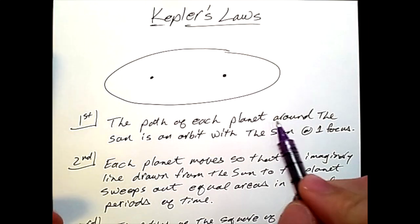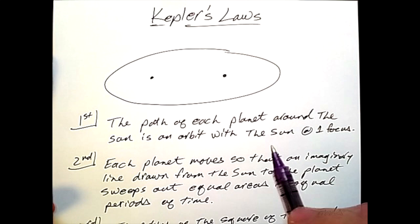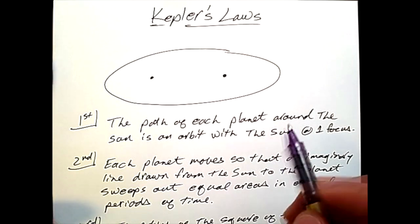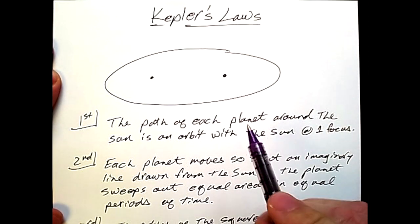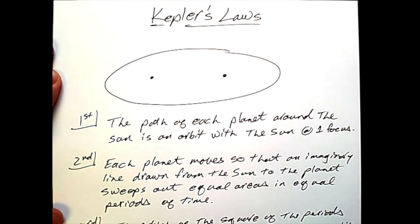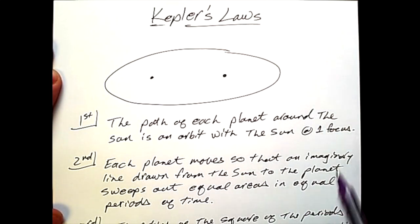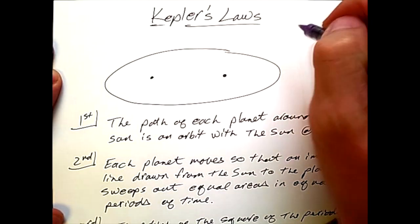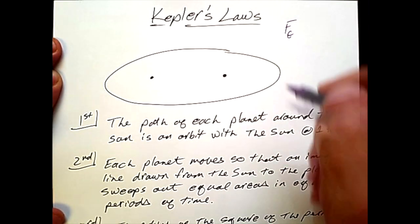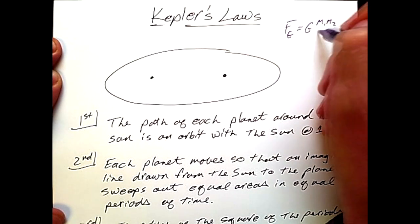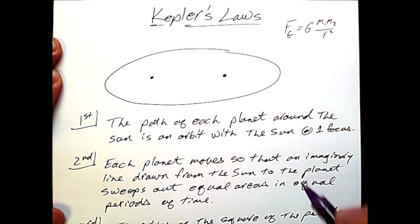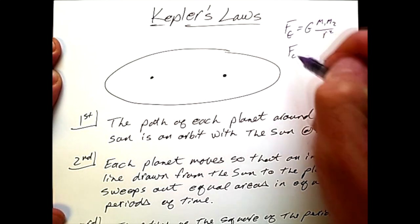Johannes Kepler studied the astronomical orbits of planetary bodies around their stars, and he was able to come up with three laws that govern the motion of the planets. The laws are fairly straightforward, and if you think about it in terms of Newton's universal gravitation, which is the attraction of the masses m1 and m2 over r squared, and then the radial centripetal acceleration.